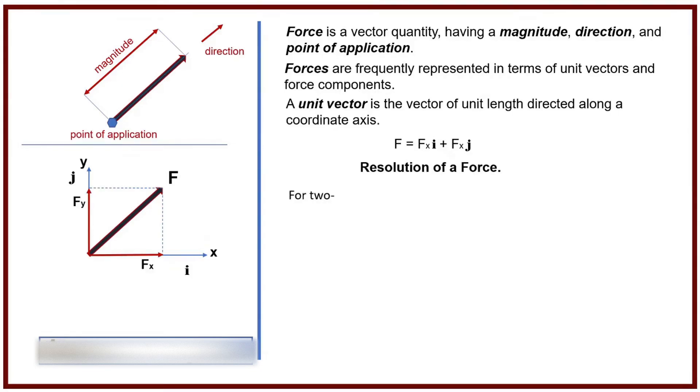For two-dimensional coordinates, force can be found from its direction cosines. Fx equals F times cosine theta x degrees. Fy equals F times cosine theta y degrees. And we can see R squared equals Fx squared plus Fy squared.